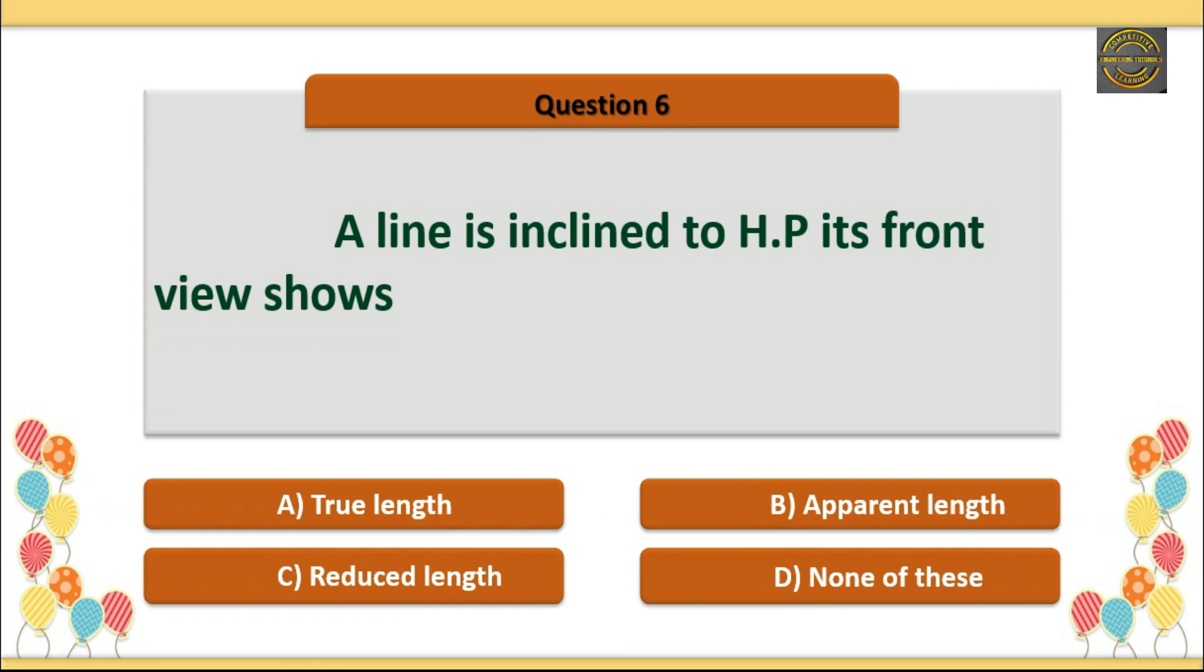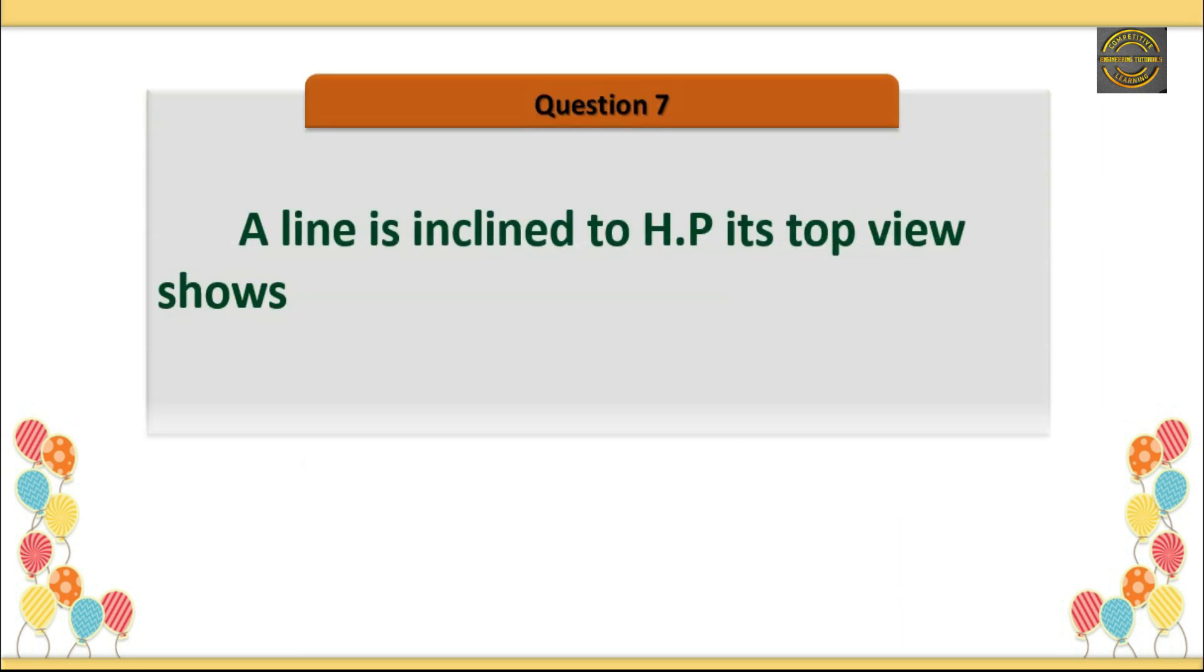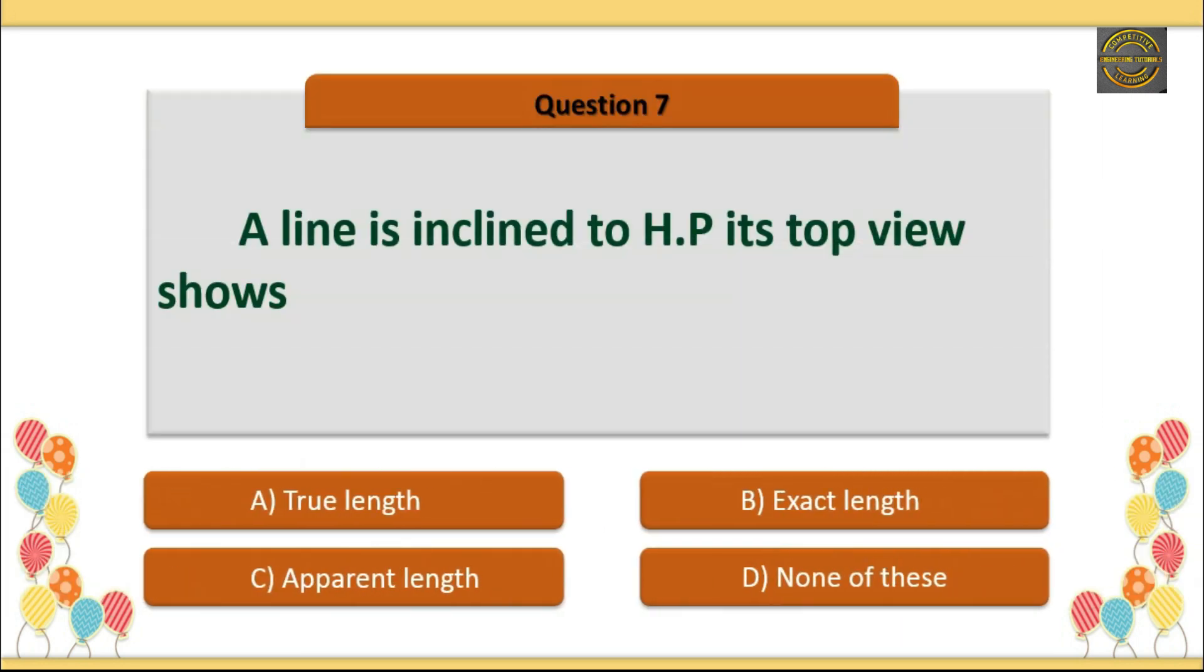Question 6: A line is inclined to HP. Its front view shows? Option A is correct: True length. Question 7: A line is inclined to HP. Its front view shows? Option C is correct: Apparent length.